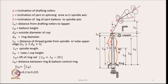Additionally, dh and dr are the diameters shown. dr indicates the diameter of the ring, and dh is the outside diameter of the cop, that is the bobbin. Lf is the distance of the thread guide from the spindle or tube upper edge, and ls indicates the length of the spindle. All these dimensions and their symbols are indicated in the diagram.